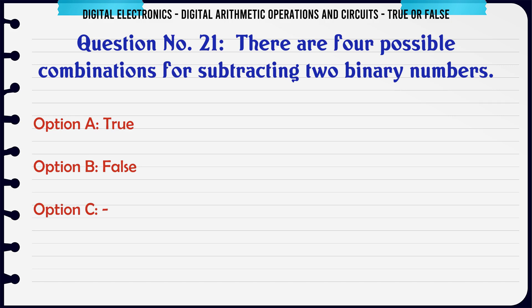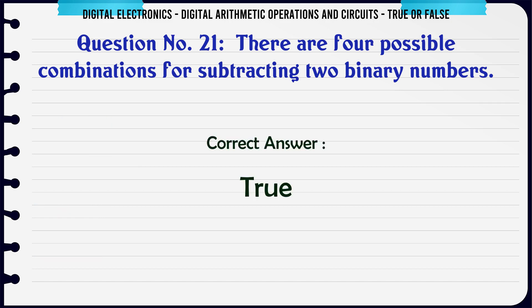There are four possible combinations for subtracting two binary numbers. True or False? The correct answer is True.